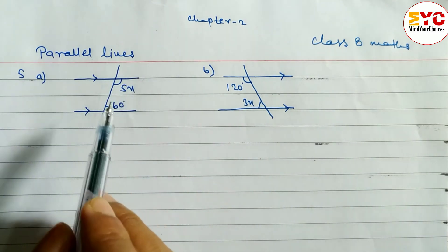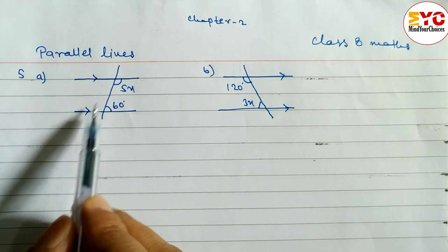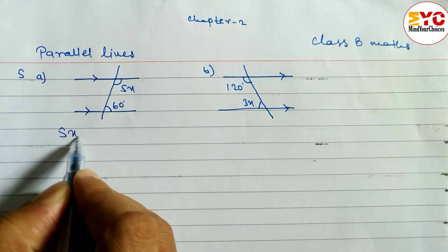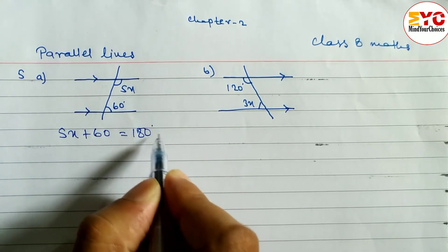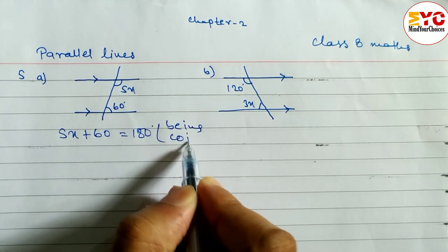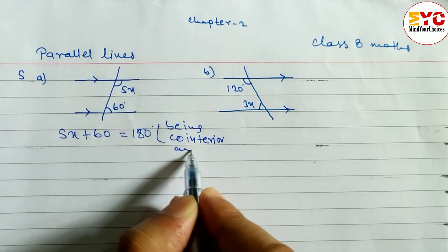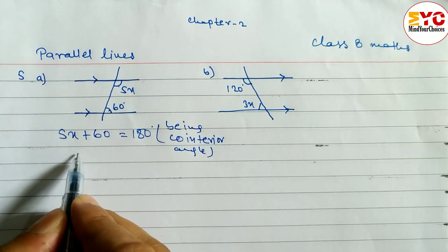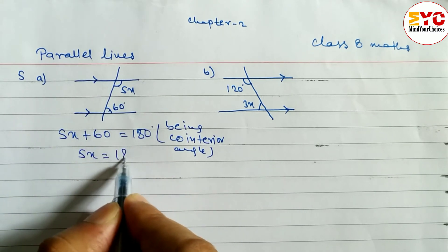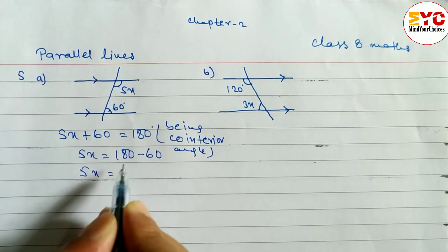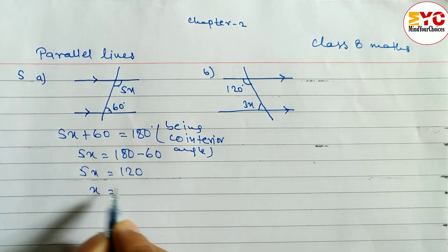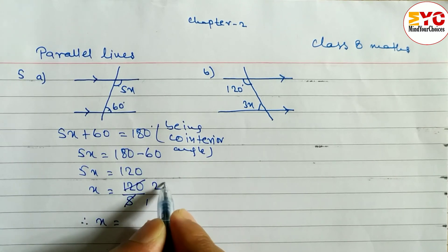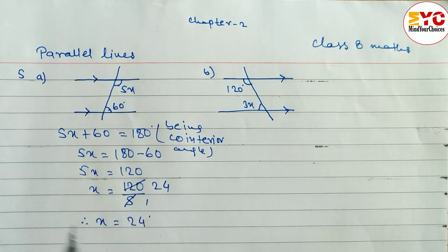In question (a), both angles are inside the two parallel lines, which means these two are co-interior angles. When you add co-interior angles, we get 180 degrees. So we write: 5x + 60 = 180. Reason: being co-interior angles. These two are unlike terms, so 5x = 180 − 60 = 120. Therefore x = 120 ÷ 5 = 24 degrees.